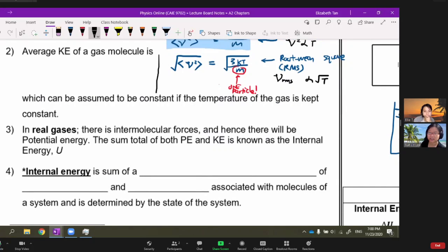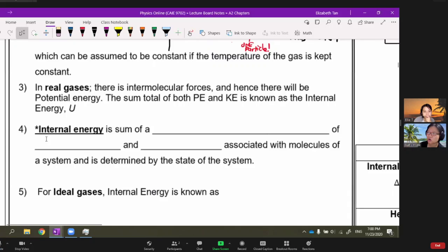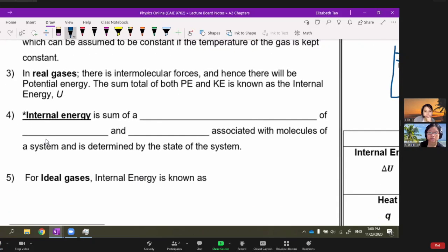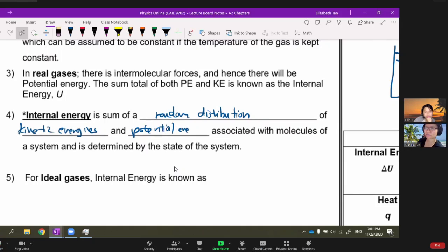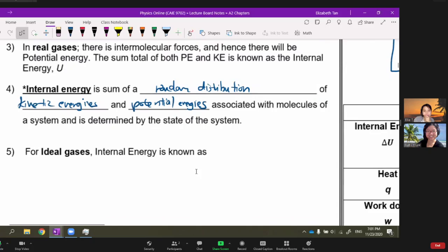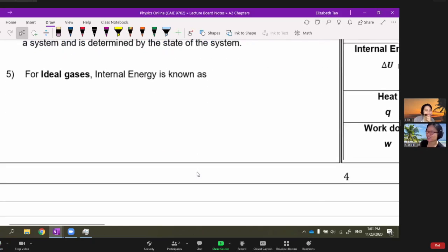I'm going to define internal energy, which is the sum of a random distribution. Why random? The KE equation I gave you is for average. It's a random distribution of kinetic energy and potential energy because that's in the bond. Potential energy is associated with the molecules of the system and is determined by what state it's in - solid, liquid, or gas.